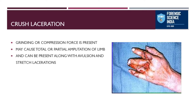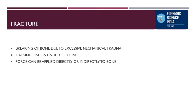The next part of blunt force trauma is fracture. It is caused by the breaking of bone due to excessive mechanical trauma, causing discontinuity of the bone. The force can be applied either directly or indirectly to the bone — for example, directly onto the femur or tibia, or indirectly, where a hit on the head can sometimes lead to a skull fracture.